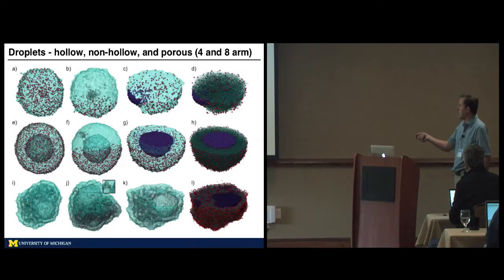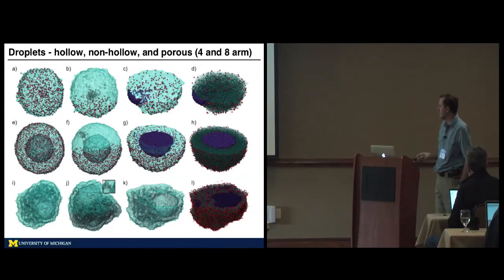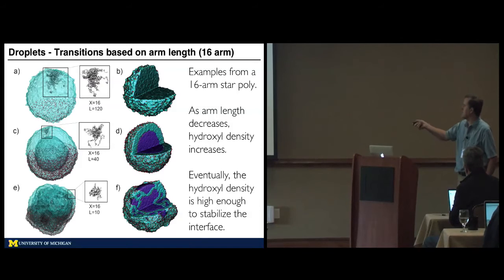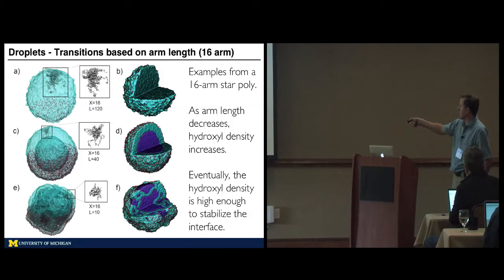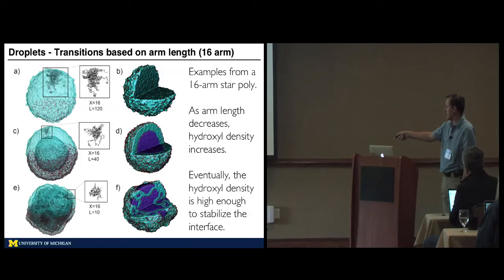Using this method, we can find stable configurations of many of the morphologies they see in the experiment: solid droplets, hollow droplets that have solvent in the middle and on the outside, and droplets with pores. We see the same sort of trends they saw in the experiment — fixing the number of arms but changing the length, longer arm polymers stabilize a solid microdroplet, slightly shorter gives a hollow microdroplet, and even shorter gives a very porous, not-very-stable droplet structure.